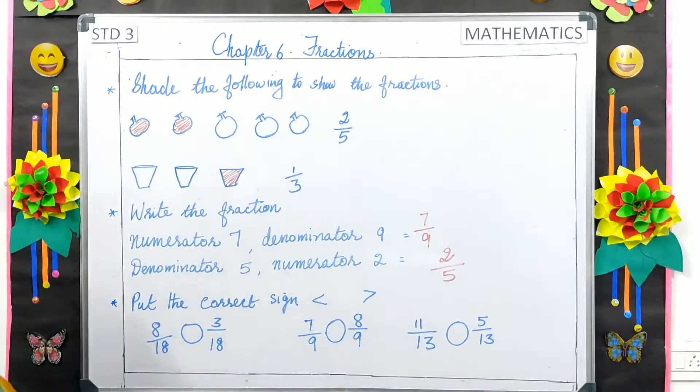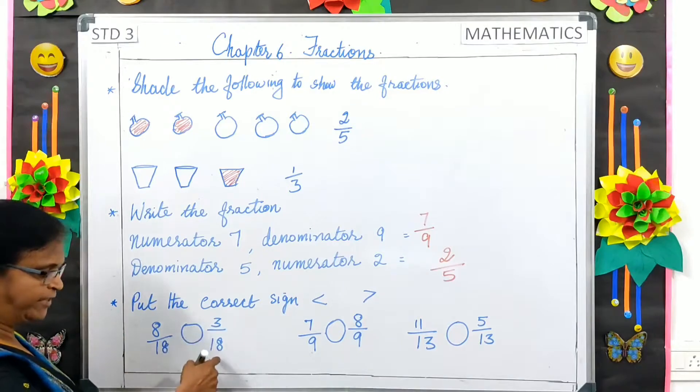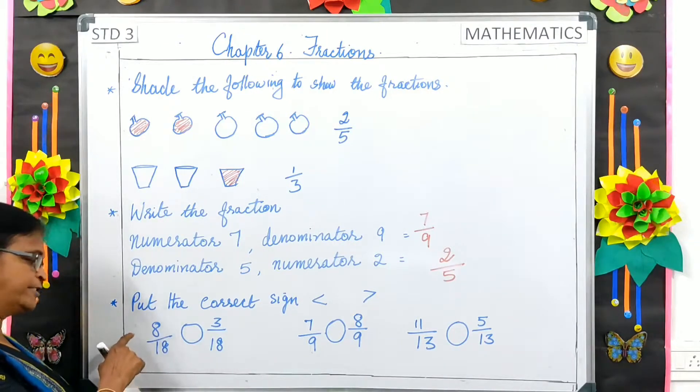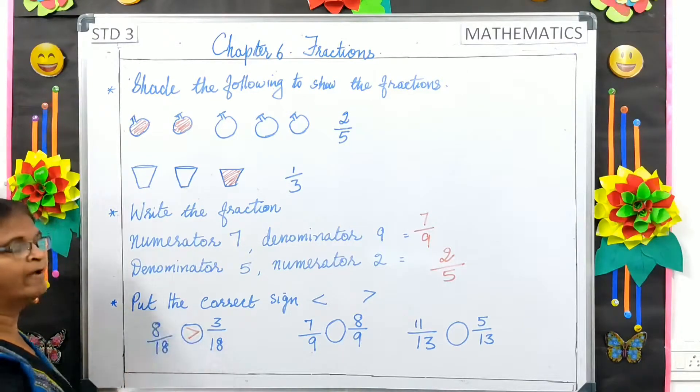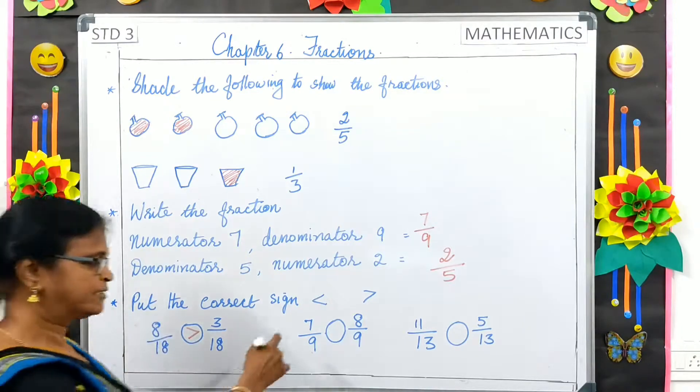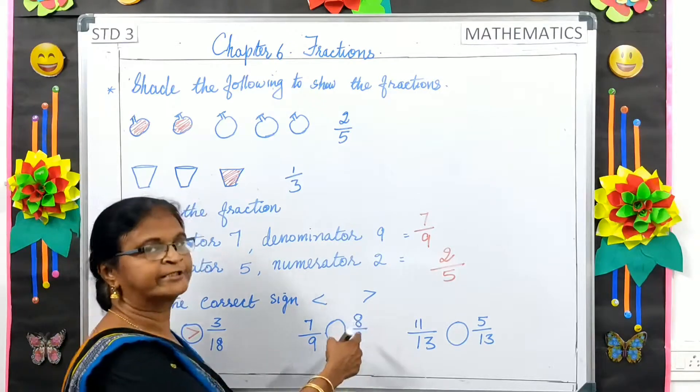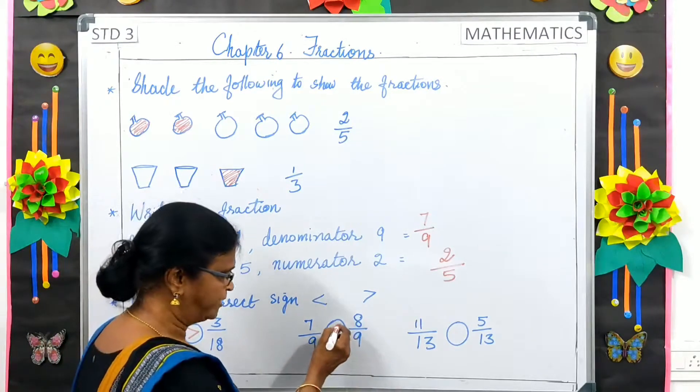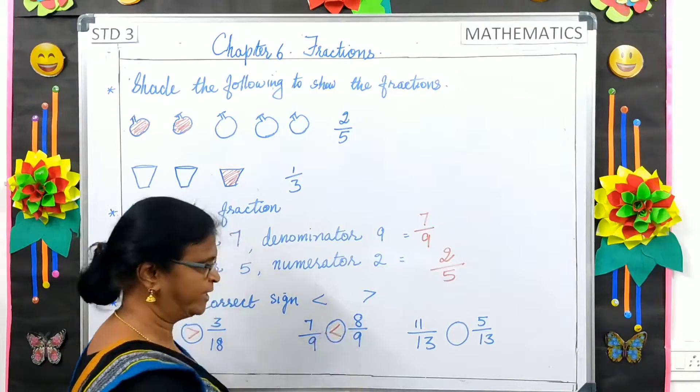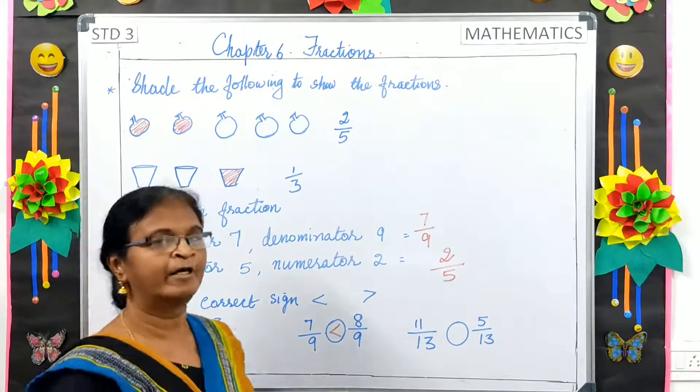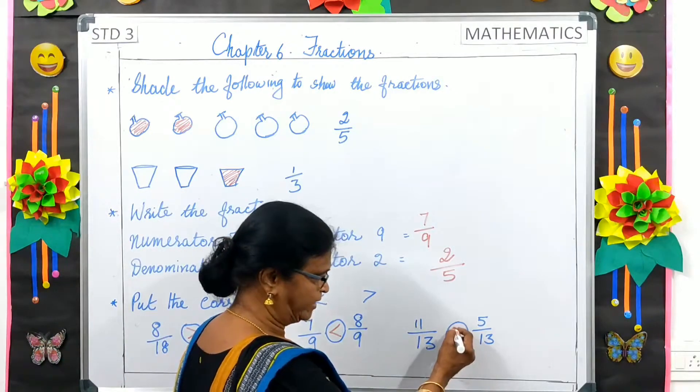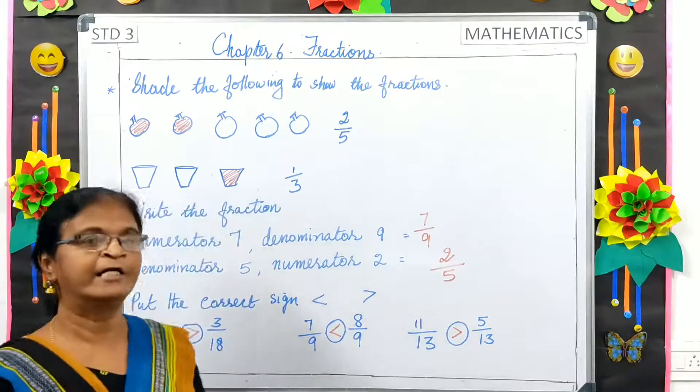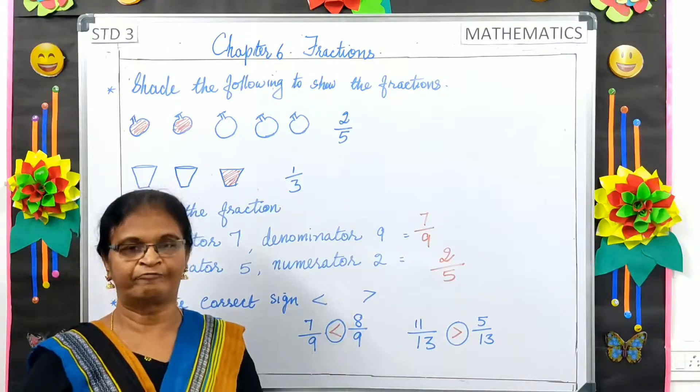Next is, put the correct sign. 8 by 80, 3 by 80. Here, 8 is the bigger numerator, so 8 by 80 is the bigger fraction. 7 by 9, 8 by 9. 8 is the bigger number, so 8 by 9 is the bigger fraction. Then, 11 by 13, 5 by 13. 11 is the bigger numerator here, so 11 by 13 is the bigger fraction.